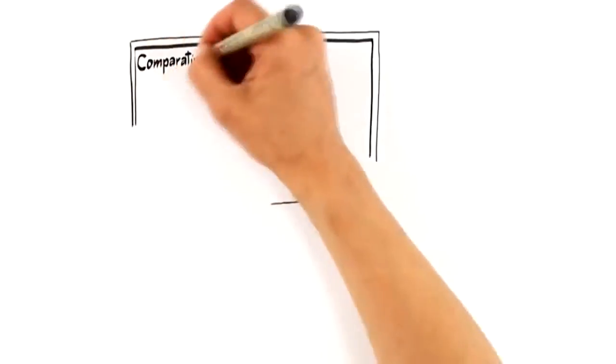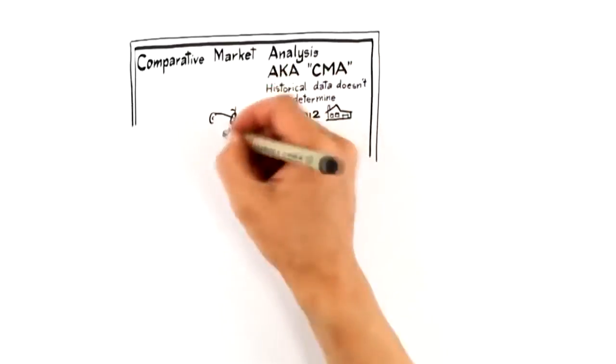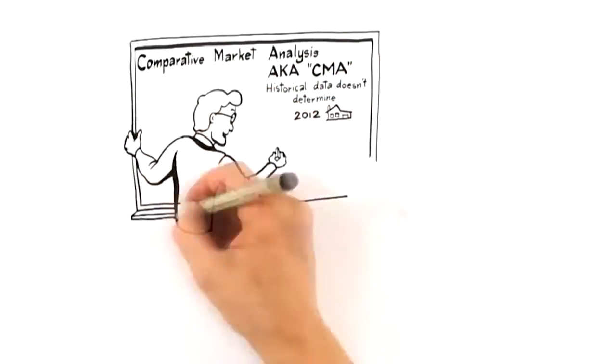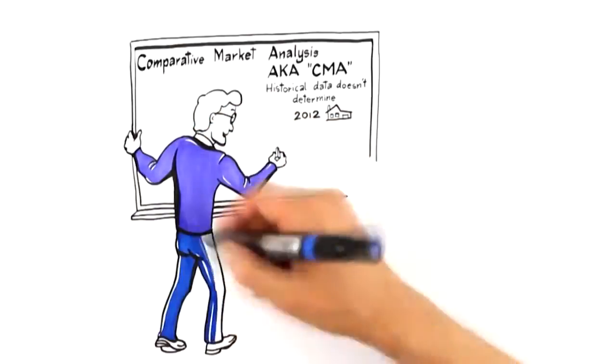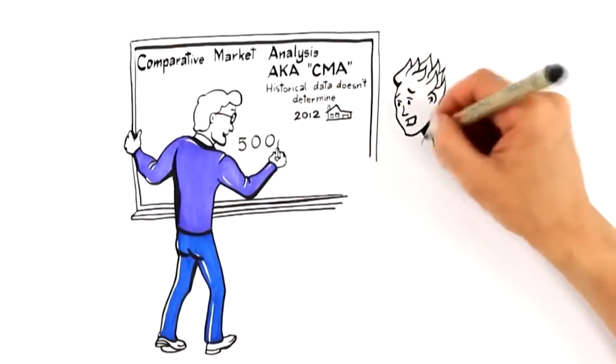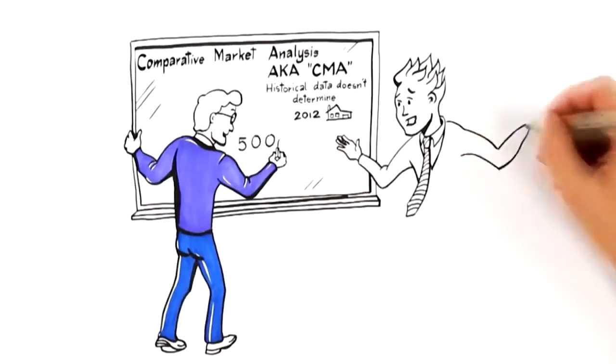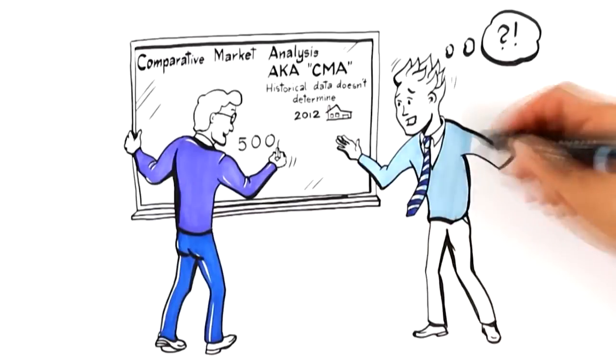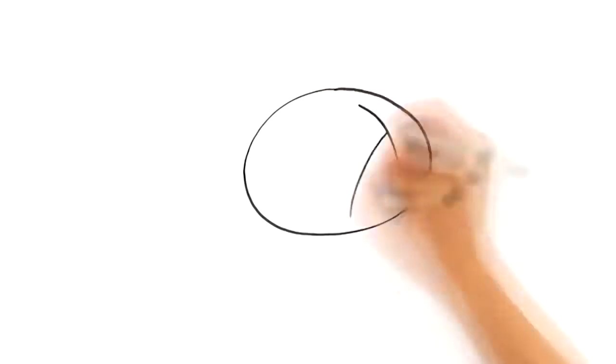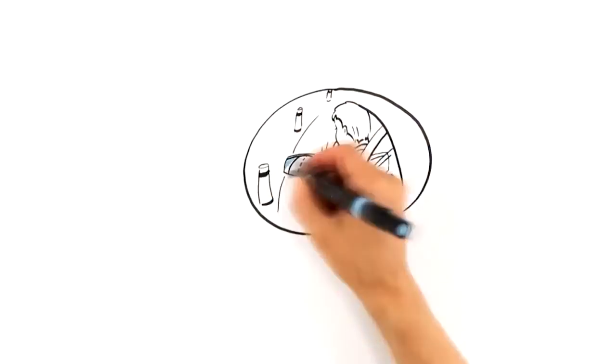So, let's start with number one: Pricing Expertise. Traditionally, agents price homes using what is called a comparative market analysis, also known as a CMA. This establishes the value of your home by comparing it to historical sales. What most agents don't realize is that historical data doesn't determine how you should position your home in today's market to attract the highest offer. This would be like driving your car while looking in the rearview mirror.